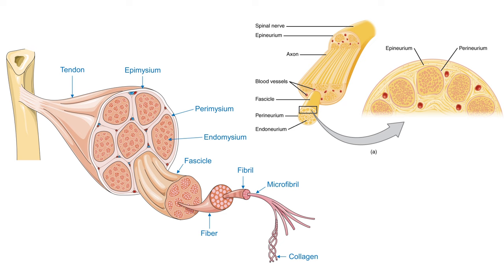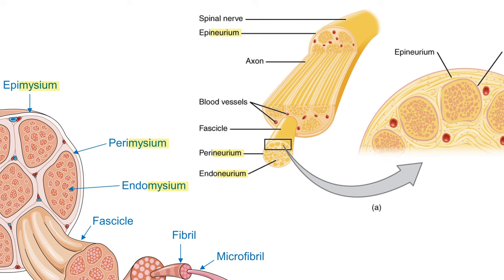If you're already familiar with the connective tissue around muscle bundles, then the naming conventions are going to come easily for nerves. Remember how for muscles you have the perimysium, epimysium, and endomysium? Well, in nerves you keep the same prefixes, but instead of mysium for muscle, you have neurium for nerves. So the outermost layer is the epineurium, a layer of dense irregular connective tissue. Then each bundle, or fascicle, is wrapped in a thinner connective tissue called the perineurium, while each neuron's cell and all of its accessories are wrapped in endoneurium.